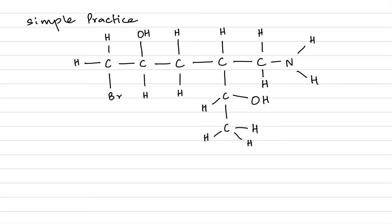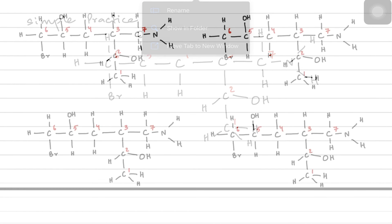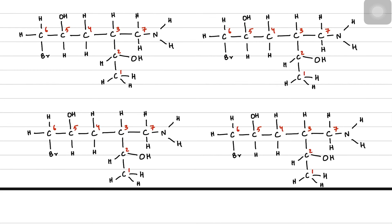Now try some practice questions. Notice this big structure and let's try to find out as many chiral carbons as we can. For simplicity I'm numbering all carbon atoms — the methyl group let's call it carbon 7. I'm making small copies of the same structure for you to focus on one carbon at a time.